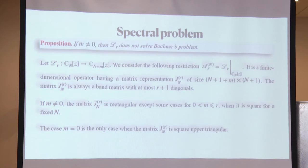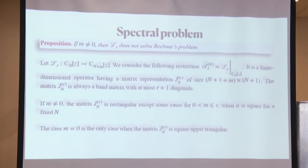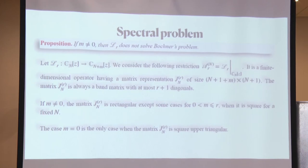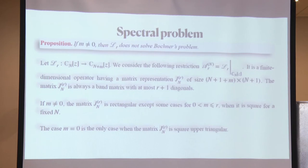In general, if M is non-zero, then the operator doesn't solve Bochner's problem at all. So for Bochner's problem, it's better to consider M equals zero. What we did with our operator: we fixed number N and restricted the operator to the space CN. We obtain a finite-dimensional operator, and taking coefficients of a given polynomial as a vector, we have an operator from a space of dimension N+1 to a space of dimension N+1 plus M — a matrix representation.